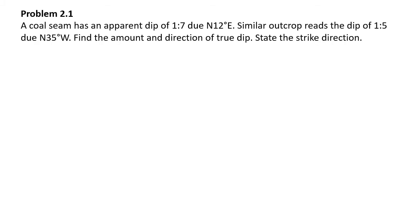Okay, so the second set — here what they do is, they will be giving us the apparent dips and we have to find out the true dip amount and direction. They will give the apparent dip and we have to find out the true dip amount and direction.